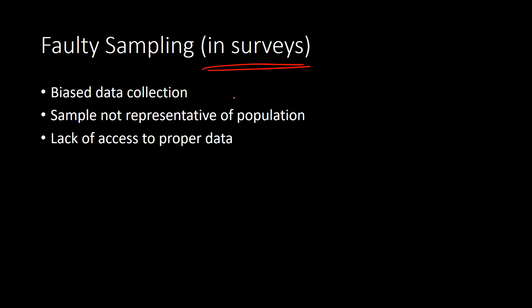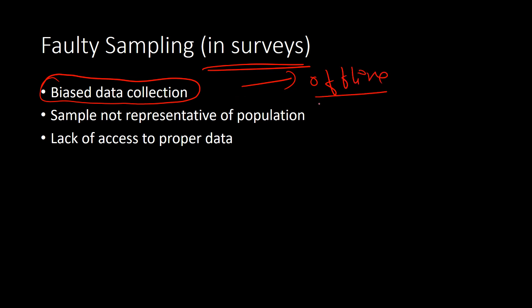The first misuse is in survey data analysis, where data collection is often biased — especially in offline surveys. Online surveys are a bit easier, but offline surveys are always difficult. People don't spend enough time and effort to collect unbiased data, and the sample we get is often not representative of the population. Researchers don't give enough attention to the representativeness of the sample, and that's a major issue.